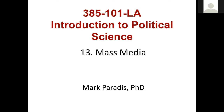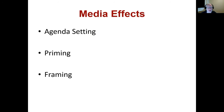Today we're going to discuss mass media. Research has typically viewed three main types of media effects: the first being agenda setting, the second being priming, and the third being framing. We're going to spend a little bit of time looking at each of them, going in depth particularly on framing.